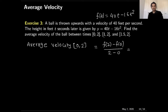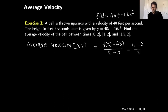For the interval 0 to 2, the average velocity is [f(2) - f(0)] / (2 - 0). Plugging in: f(2) = 40(2) - 16(4) = 80 - 64 = 16, and f(0) = 0. So the average velocity is (16 - 0) / 2 = 8. The average velocity on the interval 0 to 2 is 8.